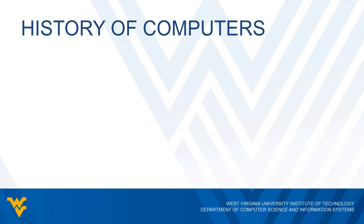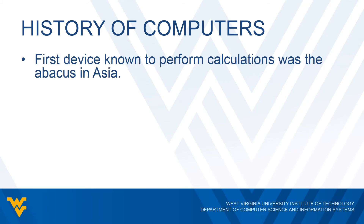Let's start the course by going over a brief overview of the history of computers. While a lot of the modern advancements have been going on for the past 40 to 50 years, there have been some very interesting things that happened over the past couple hundred years. The very first known device that did any type of calculation was the abacus, which was invented in Asia. We don't know exactly when it was created — we're talking hundreds if not thousands of years ago — but as far as we know it is the first known device to do any type of calculations.